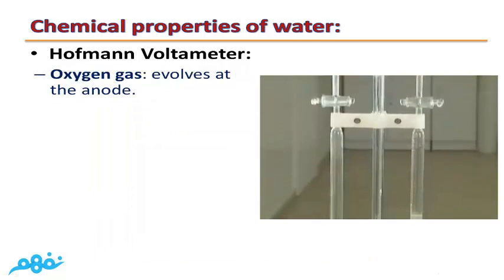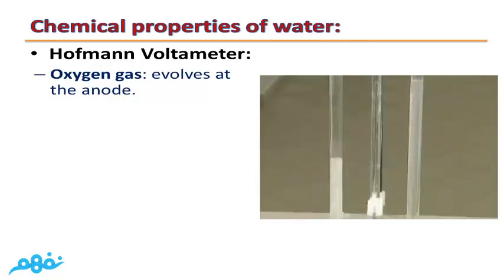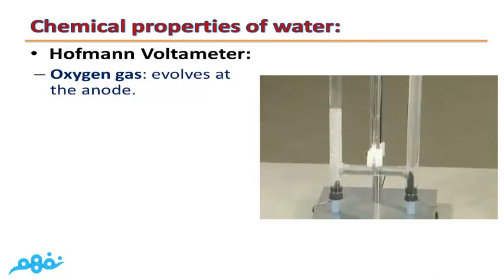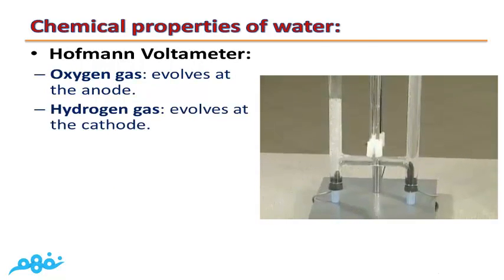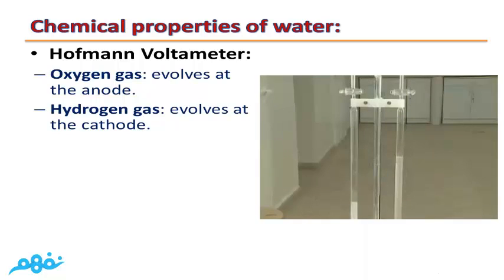In the Hoffman voltmeter, oxygen gas evolves at the anode and hydrogen gas evolves at the cathode. This is because oxygen is negatively charged, so it is attracted to the anode, which is positive. While hydrogen is positively charged, so it is attracted toward the cathode, because the cathode is negative.